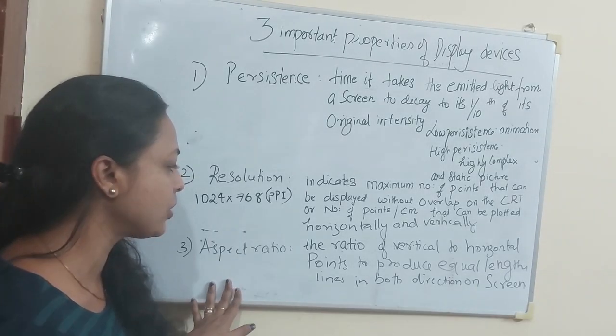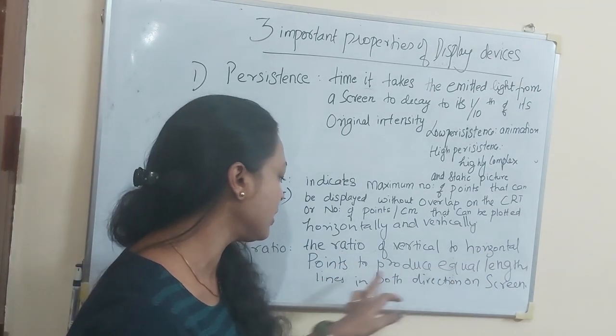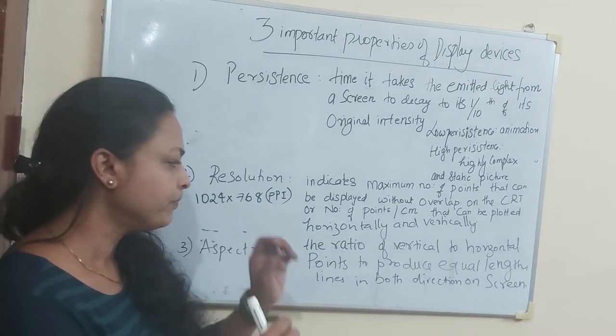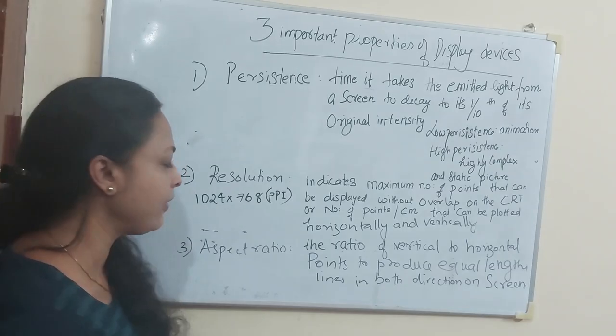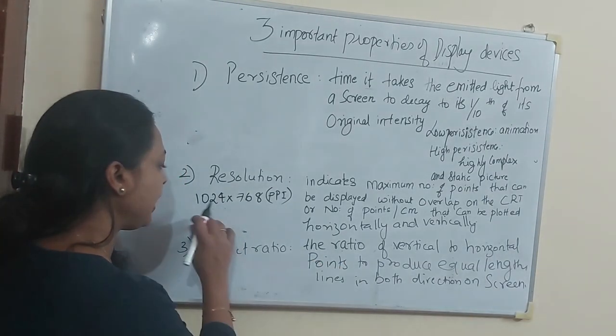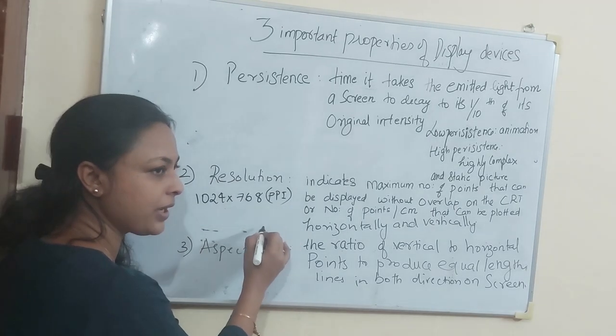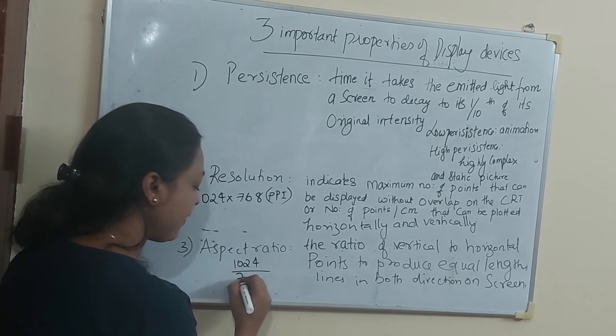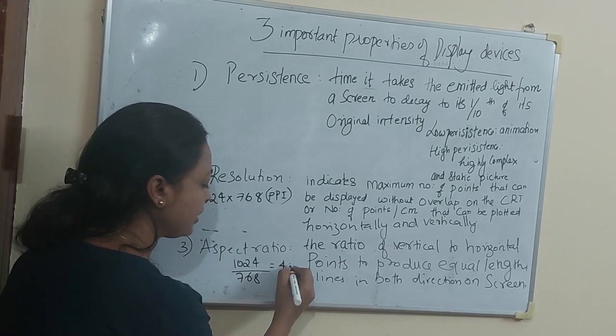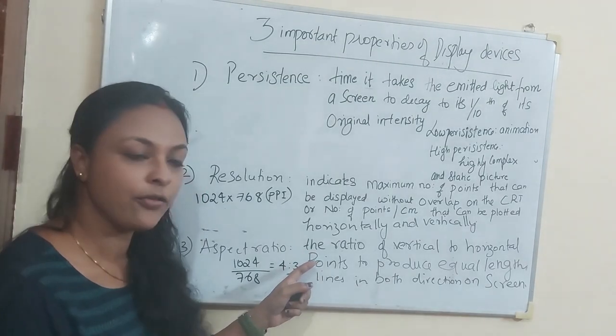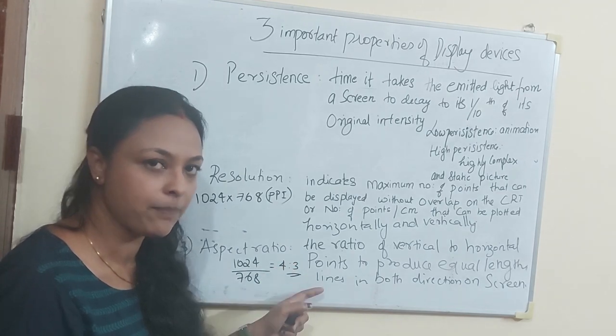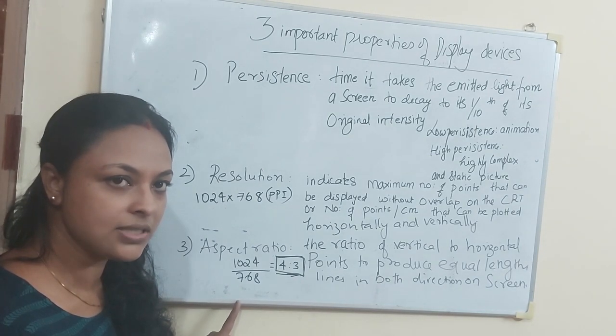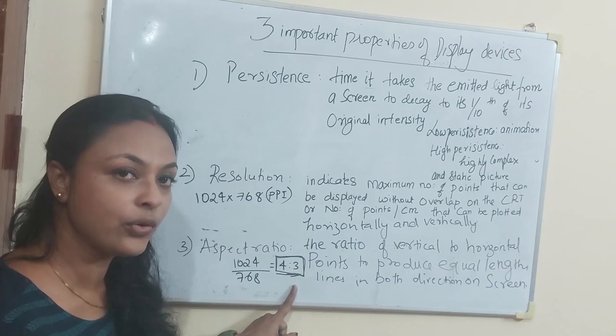Next is aspect ratio. Aspect ratio is the ratio of vertical to horizontal points to produce equal length lines in the direction of the screen. So there will be x points, there will be y points. Let's say 1024 by 768. The number of x points will be 1024 and number of y points will be 768. So that will be around 4 is to 3. If you are having a resolution of 1024 by 768, that means you will have an aspect ratio of 4 is to 3.